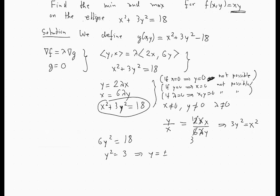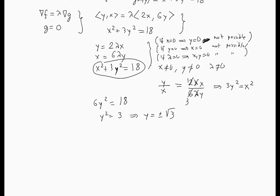So here we have two possibilities. If y = √3, then we get x² + 9 = 18, which implies that x² = 9, which means that x = ±3. So that yields two points: (3, √3) and (-3, √3).